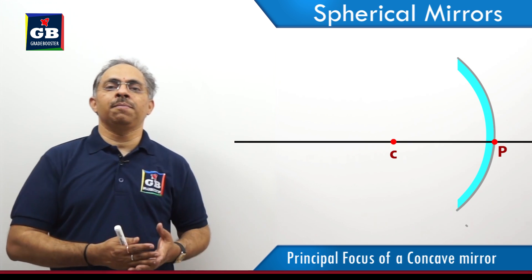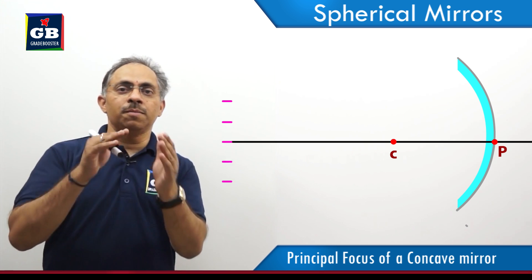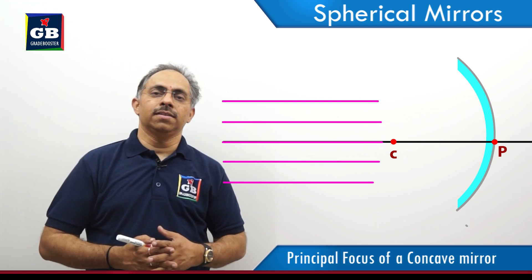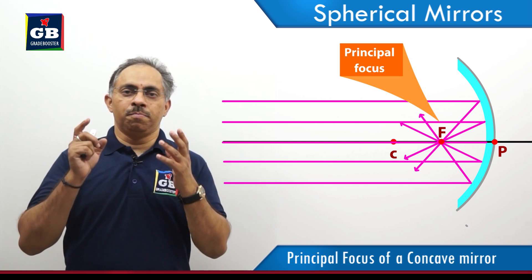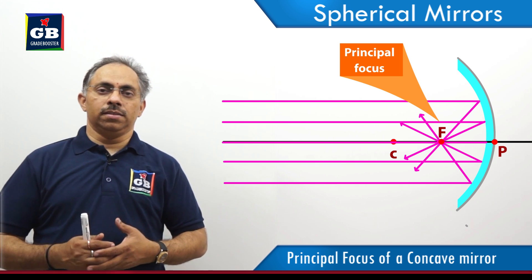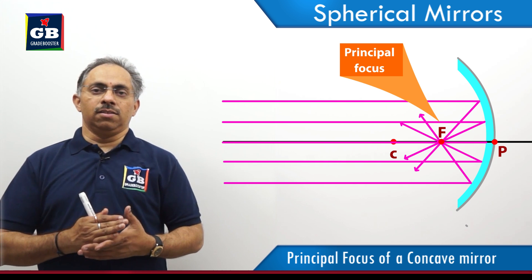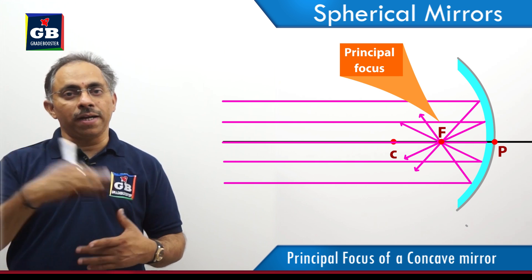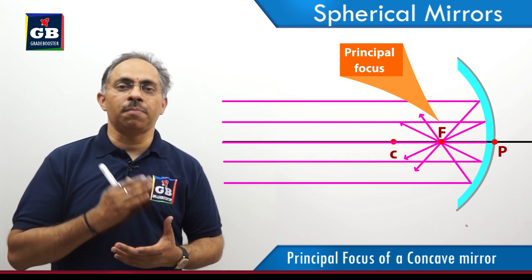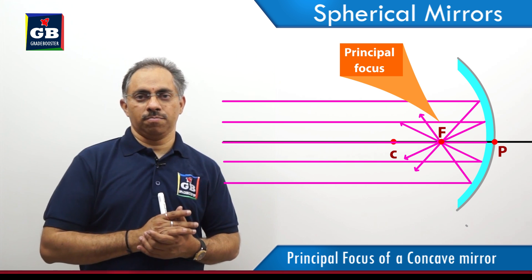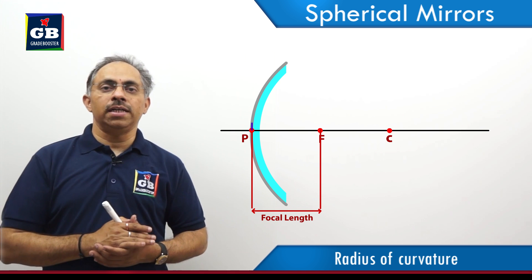In the case of a concave mirror, if I take a parallel beam of light parallel to the principal axis incident on the mirror, then all these rays after reflection will pass through a single point on the principal axis of the mirror. This particular point through which all the reflected rays — reflected from the parallel beam of light parallel to the principal axis — pass through after reflection, is known as the principal focus. The distance between the pole of the mirror and the principal focus we call the focal length.